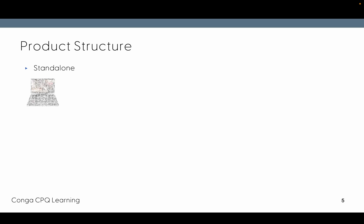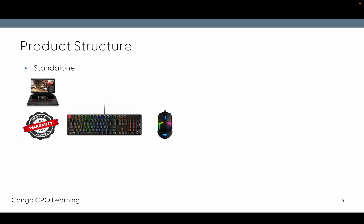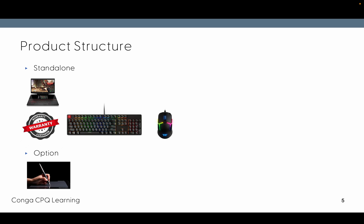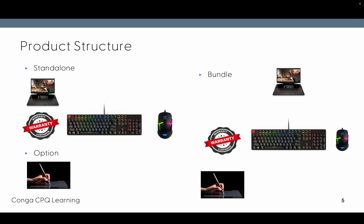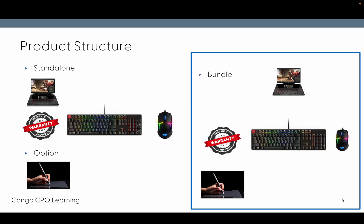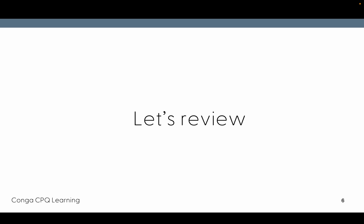For the product structure example: standalone products are laptop, warranty, keyboard, and mouse — you can sell these independently. For option, I've taken the example of a light pen which must be sold with a laptop. So warranty, mouse, keyboard, and light pen can be grouped with laptop as a bundle, where laptop is the bundle product and the other four are options.